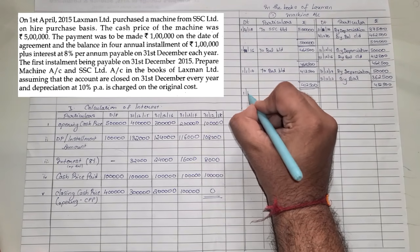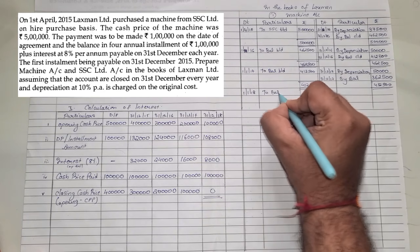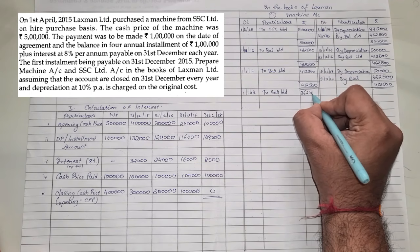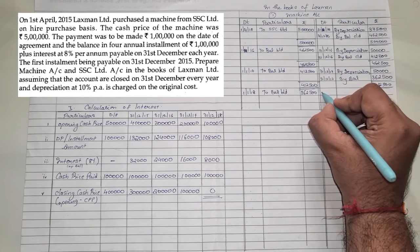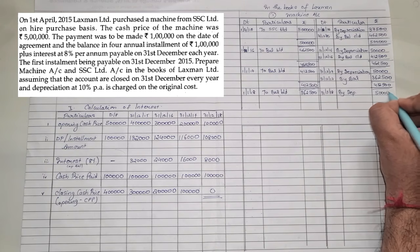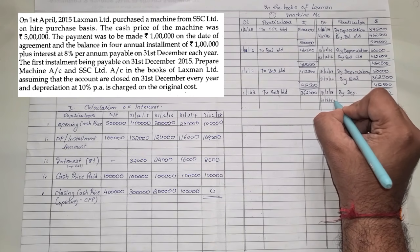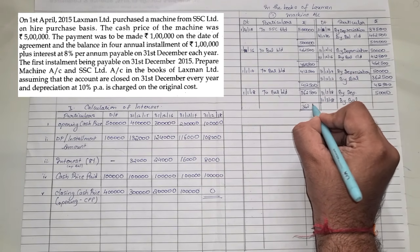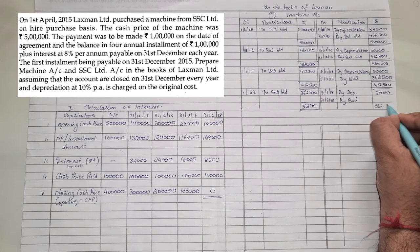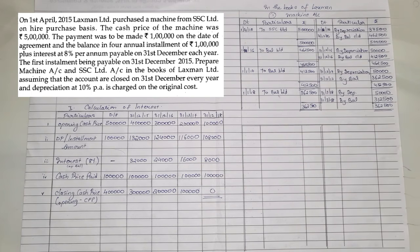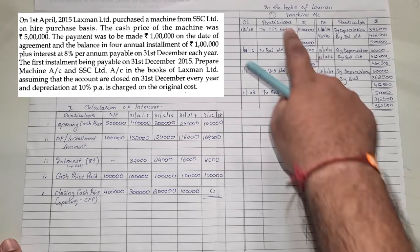On 1st January 2018, To Balance Brought Down — three lakhs 62,500. On 31st December 2018, By Depreciation — full year, 50,000. By Balance Carried Down; the account tallies to three lakhs 62,500 on both sides; final closing balance = three lakhs 12,500. That completes the machinery account — it is simply the same three entries repeated each year.